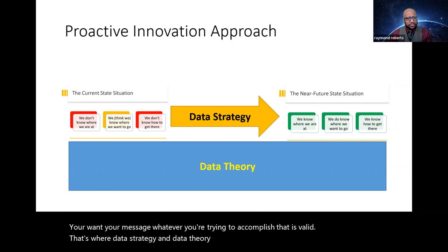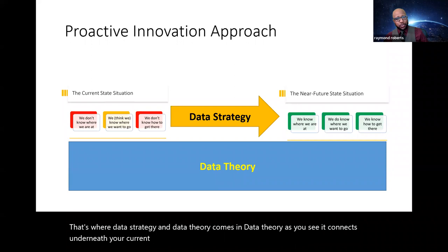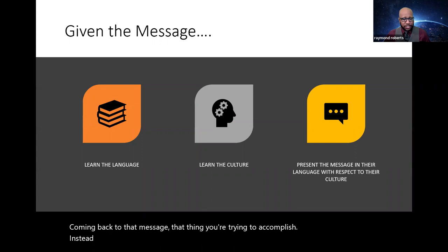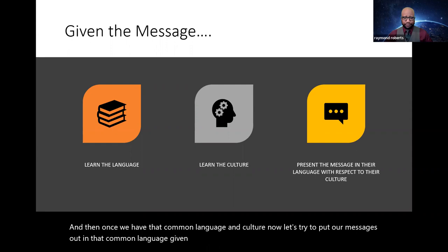That's where data strategy and data theory comes in. Data theory, as you see, it connects underneath your current state and it takes you across your near future. And data strategy is that how-to piece connecting the two. Coming back to that message, that thing you're trying to accomplish. Instead of starting with your message, data theory and data strategy combined takes the idea of, hey, before we jump into this, why don't we all learn a common language, which therefore results in us getting a common culture. And then once we have that common language and culture, now let's try to put our messages out in that common language, given that common culture.